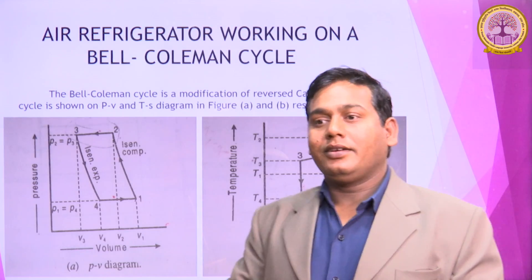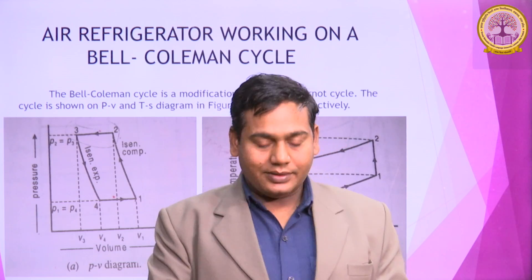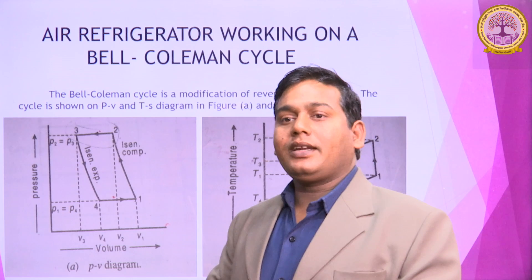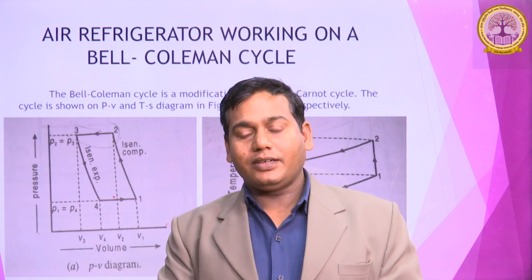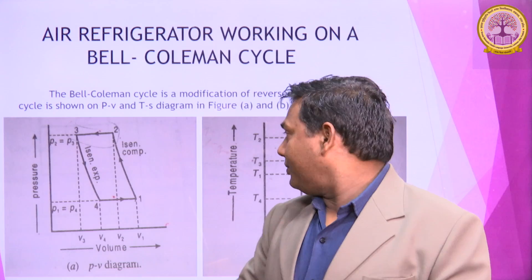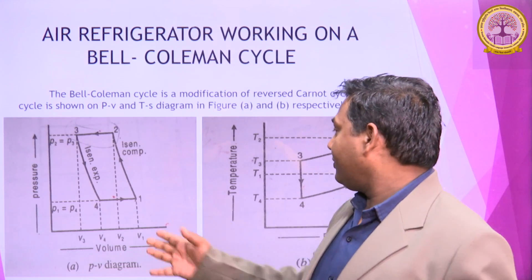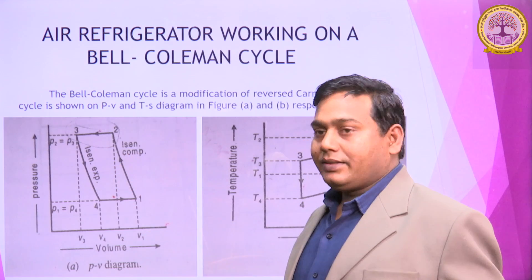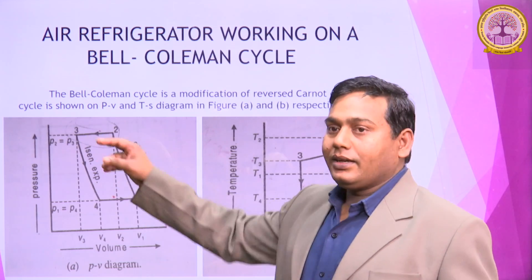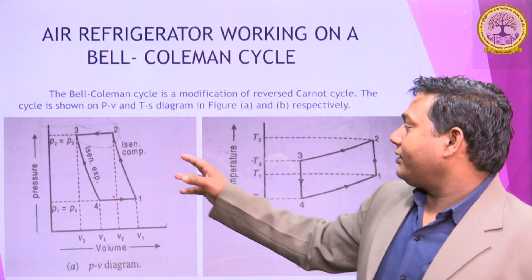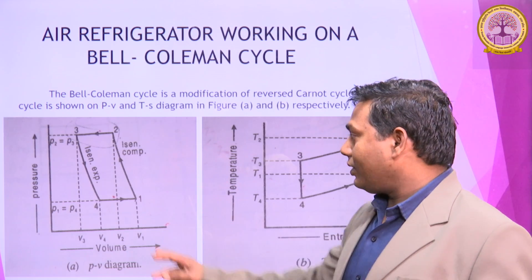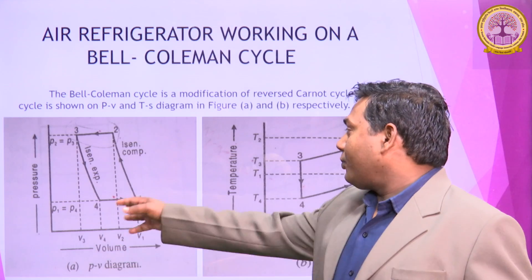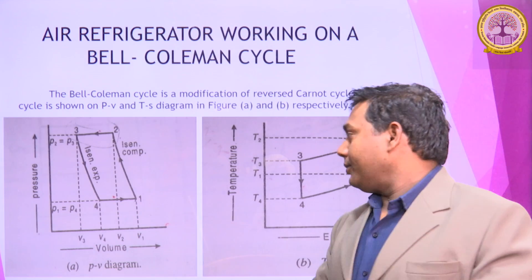In the Bell-Coleman Cycle, we are discussing the Pressure-Volume Diagram and Temperature-Entropy Diagram. In the Pressure-Volume Diagram, there are four points. 1 to 2 is the Isentropic Process, 2 to 3 is the Constant Pressure Process, 3 to 4 is the Isentropic Expansion Process, and 4 to 1 is the Constant Pressure Process.